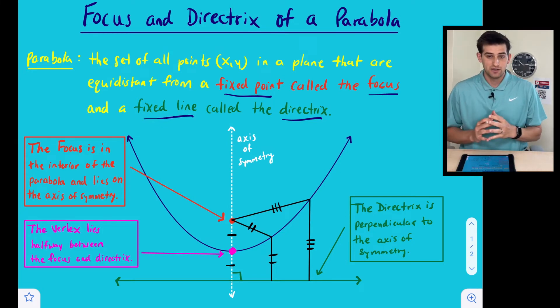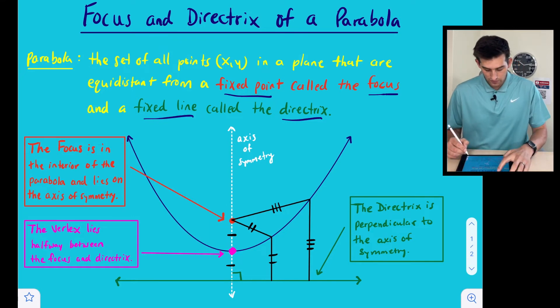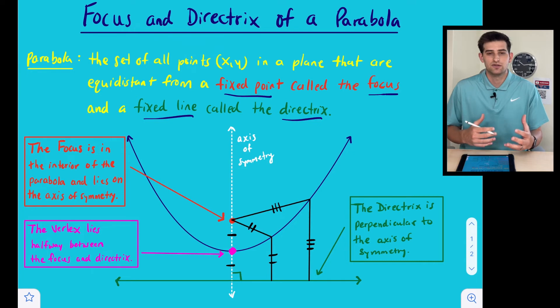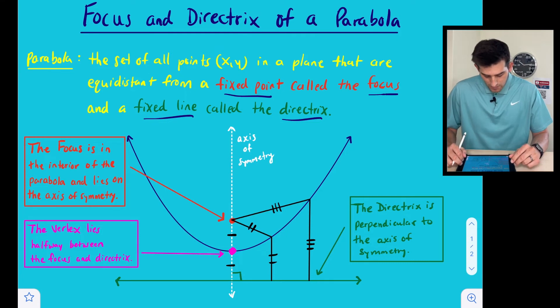Now let's talk more specifically about the focus. The focus here is a point, and it is right here. It is represented by red here, and over here on the left, it says the focus is in the interior of the parabola, and it lies on the axis of symmetry. So the focus is going to be a coordinate, and it could be any coordinate as long as it's on that axis of symmetry, and when we're using the focus and the directrix to write an equation of a parabola, it's going to be given to you.